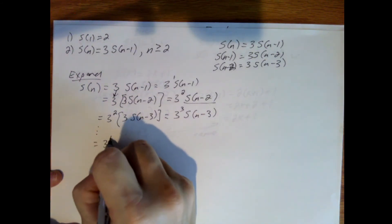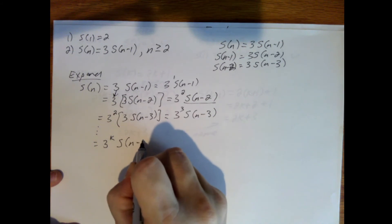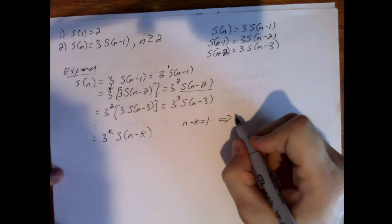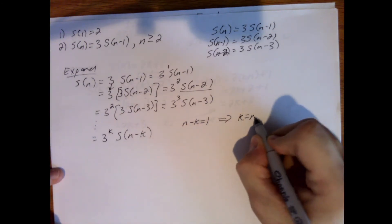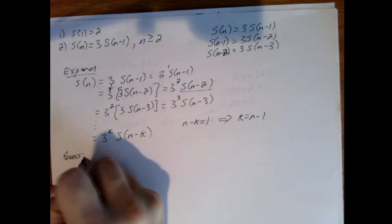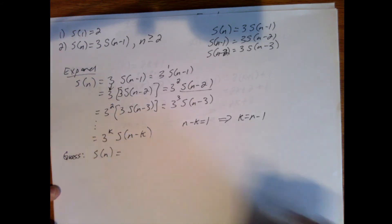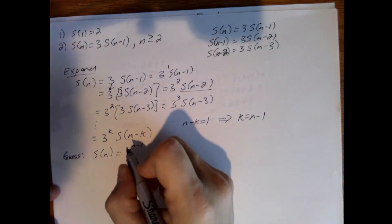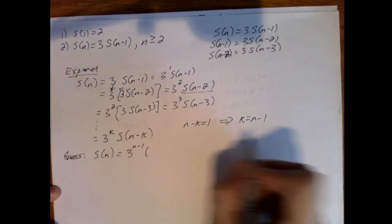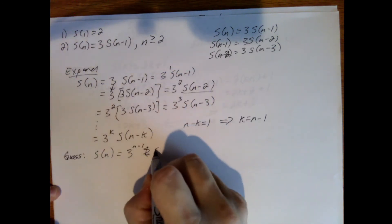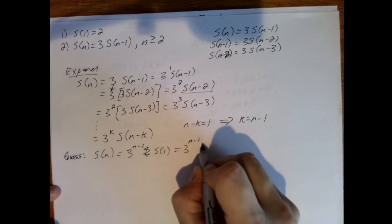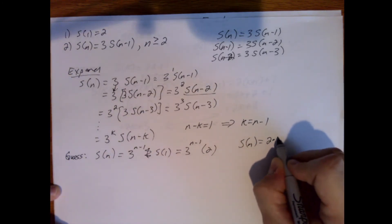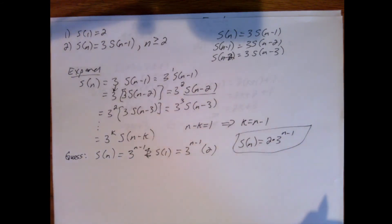So the pattern is 3 to the k-th power times s of n minus k. We know n minus k eventually becomes 1, so k equals n minus 1. Substituting: s of n equals 3 to the (n minus 1) power times s of 1, which is 3 to the (n minus 1) power times 2, or 2 times 3 to the (n minus 1). That's my guess at a closed-form solution.